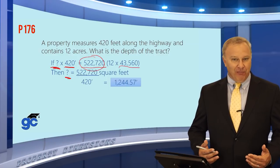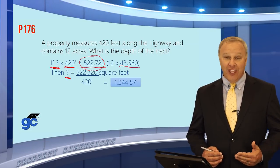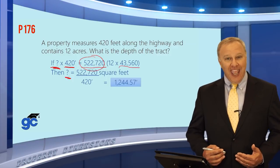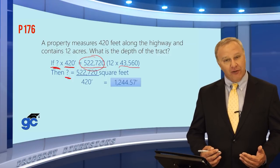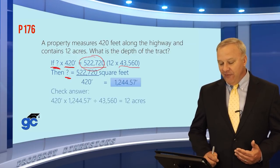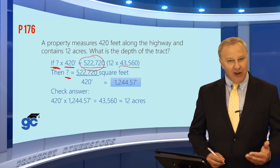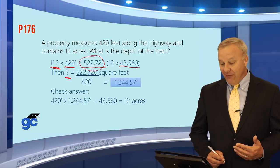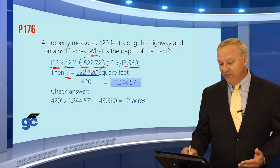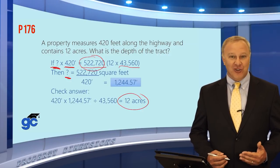These questions are easy to verify. Using depth × width: 1,244.57 × 420 = 522,720 square feet. Divide that by 43,560 and you get 12 acres. As long as those numbers match, you've confirmed your answer is correct.